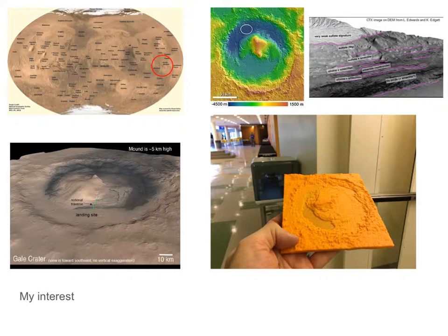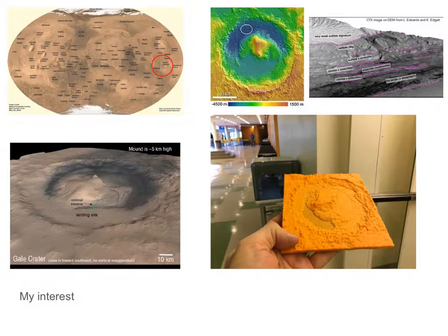This is a 3D print of a DEM of Gale Crater where the Curiosity rover is. I was fortunate enough a couple years back to find someone who had taken the digital elevation model and converted it into a format I could print on my printer. I never really pursued this much for my class because at the time there was a pretty convoluted workflow process with a fairly steep learning curve. I could probably figure out where to find the DEMs developed for Mars, but translating that into files I could print on my 3D printer was just more than I wanted to deal with.